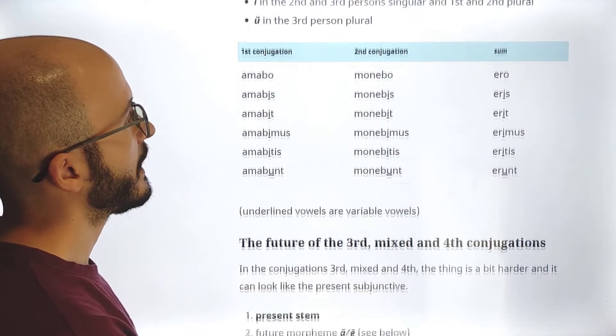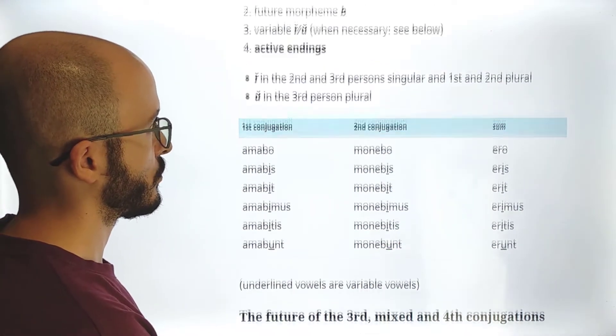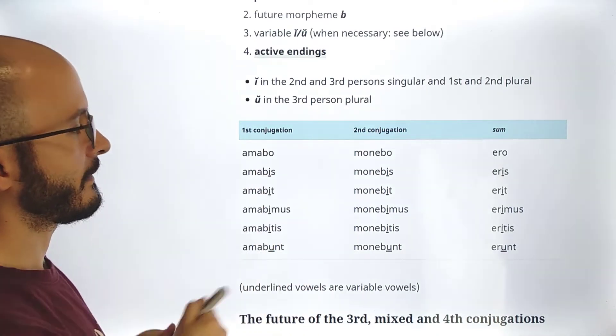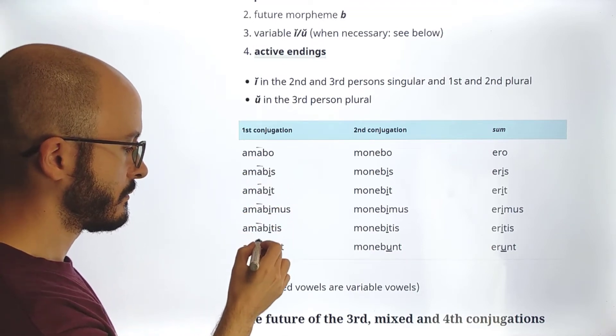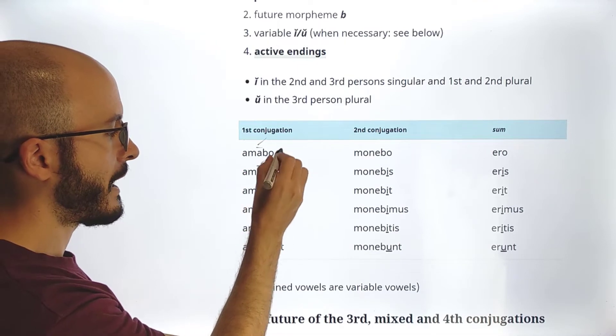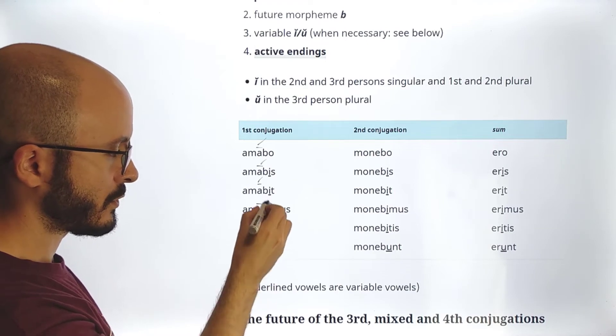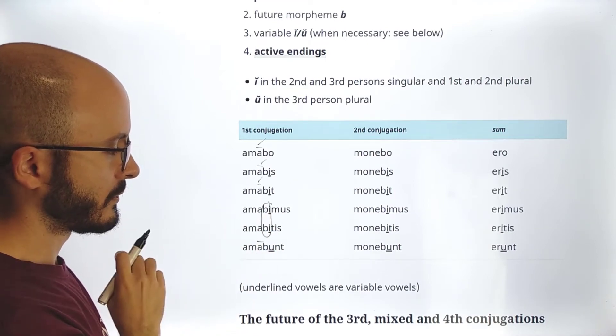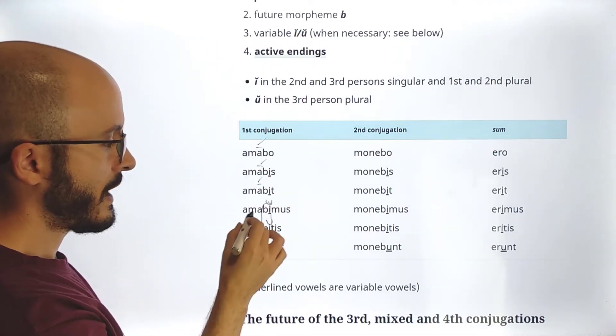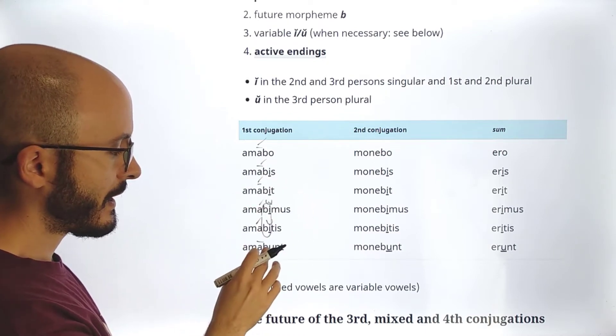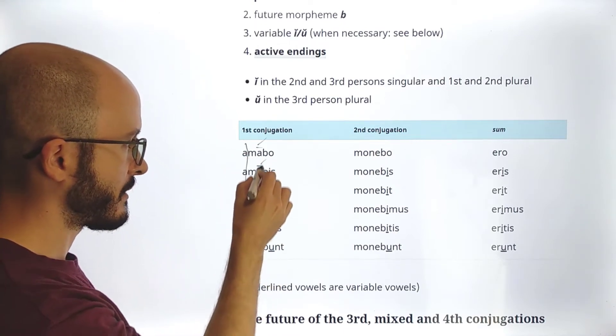So here we have this table with these conjugations. Let's see how this works. So here we have, now again, we already know that this A is always long in the first conjugation. So amabo, amabis, amabit. Now, here, this is the penultimate, so we don't really care if this is long or not. Now, this E is this E which is short. So amabimus, amabitis, and now here amabunt. So we see that actually the stress syllable is always the same.